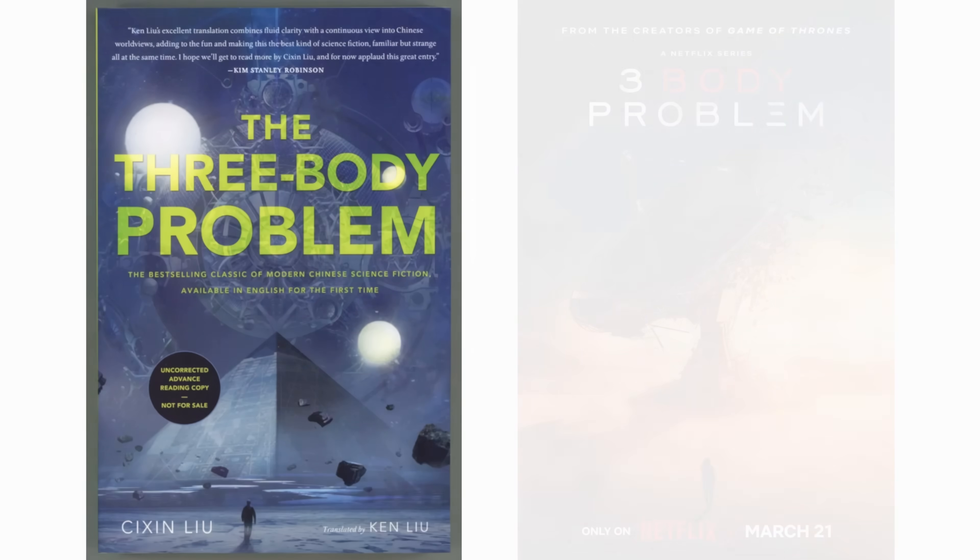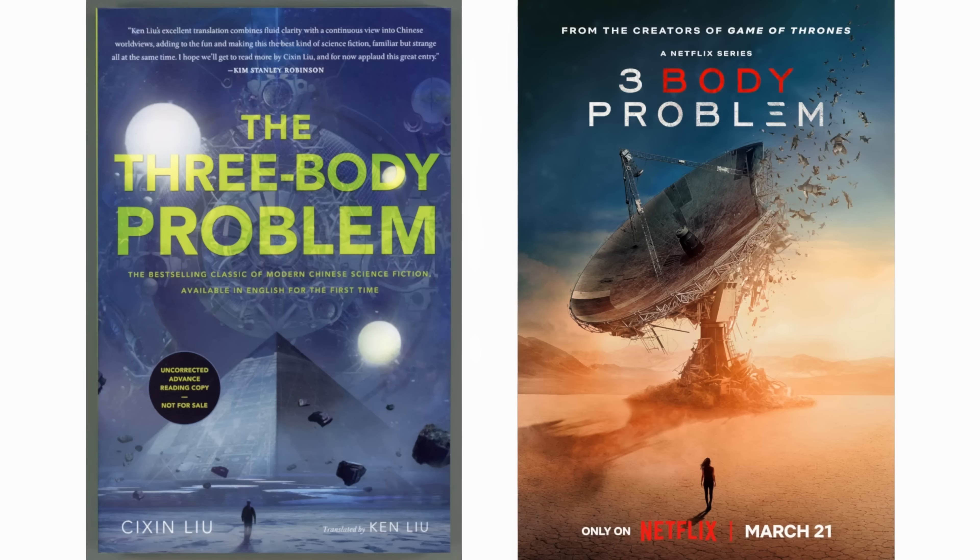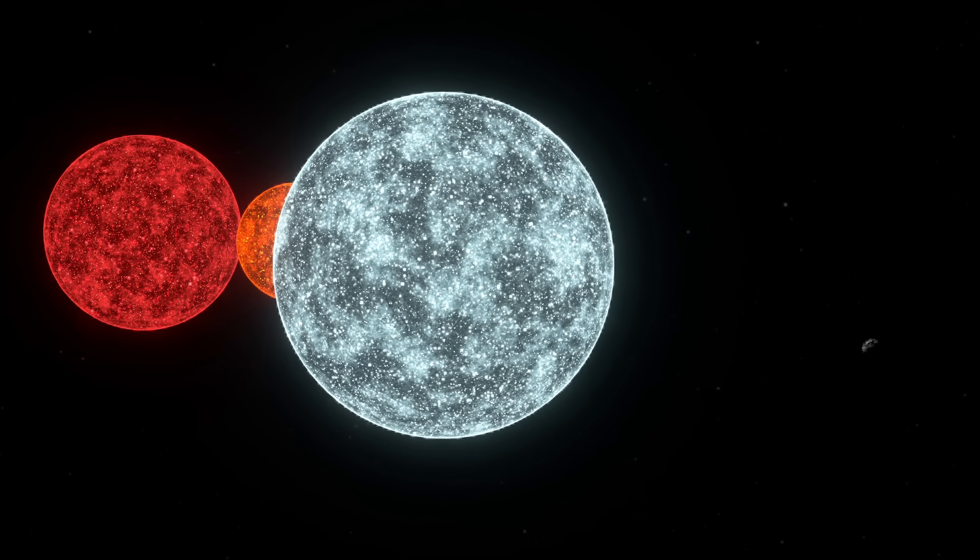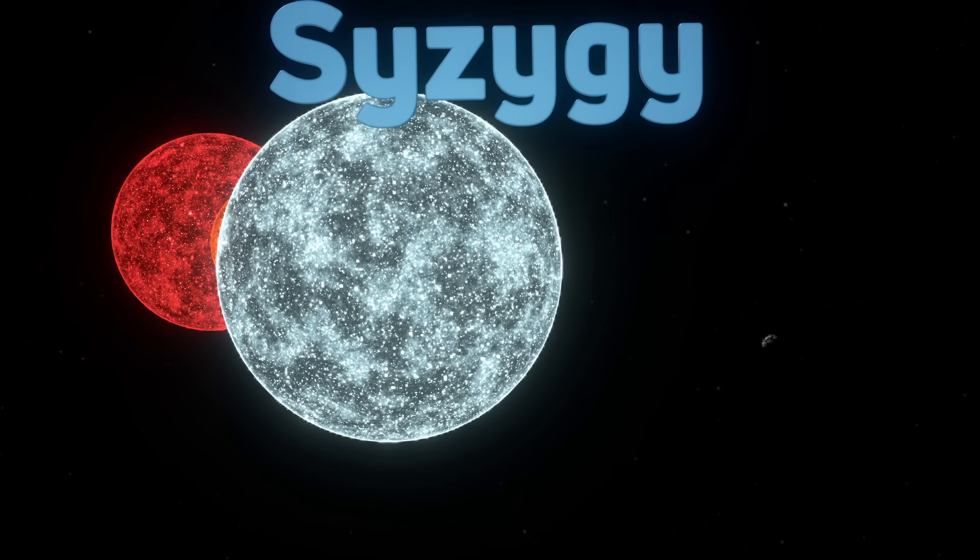There's a scene in the book and Netflix series, The Three-Body Problem, where a planet that orbits three stars happens to align with all three, forming a syzygy.